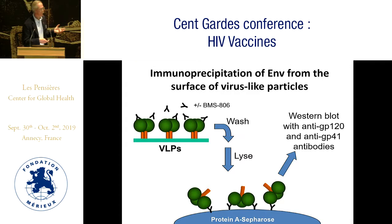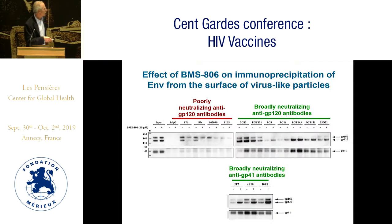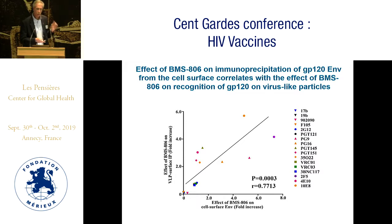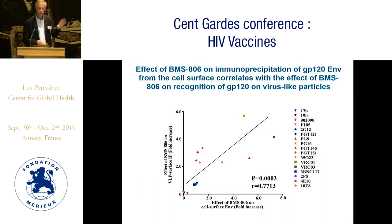We did a similar set of studies on virus-like particles. Again, we're binding antibodies in the presence or absence of BMS-806, washing away unbound antibodies, lysing the virions, and capturing antibody-envelope complexes. The answers are quite similar: poorly neutralizing antibody recognition is decreased by BMS-806 treatment, whereas recognition by broadly neutralizing antibodies is either maintained or in many cases — particularly for quaternary antibodies — increased. There is a very strong correlation between the effect of BMS-806 on cell-surface and VLP envelope glycoproteins, supporting that cleaved cell-surface envelope mimics what's on the virus particle.